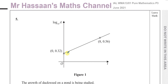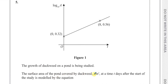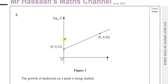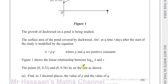It's been added to the new P3, and this is where we have to deal with logarithms and converting equations which are exponential or even polynomial into straight line form. So here we have a graph. The growth of duckweed on a pond is being studied. The surface area covered by duckweed, A metres squared, at time t days after the start of the study is modelled by the equation A = p times q to the power of t, where p and q are positive constants. Figure 1 shows a linear relationship between log base 10 of A and t, with points (0, 0.32) and (8, 0.56) lying on the line.